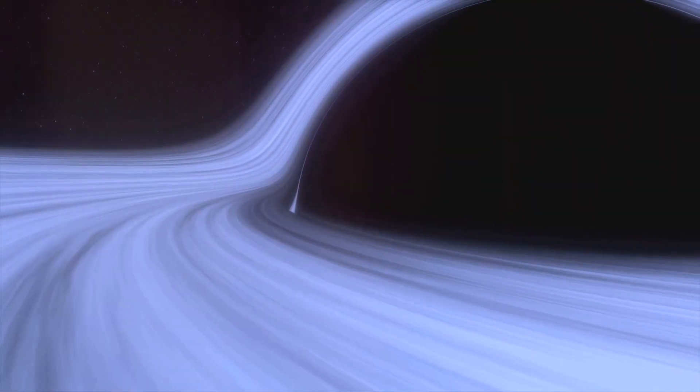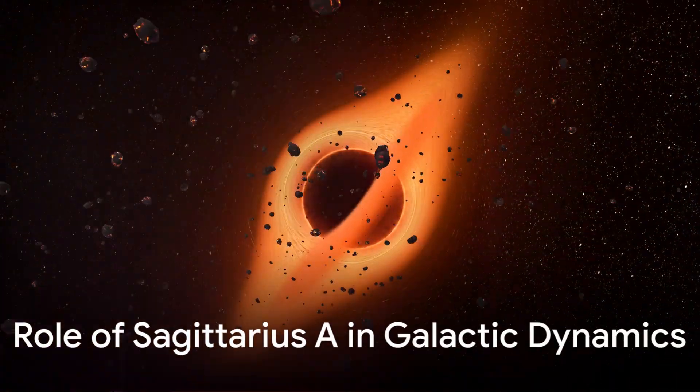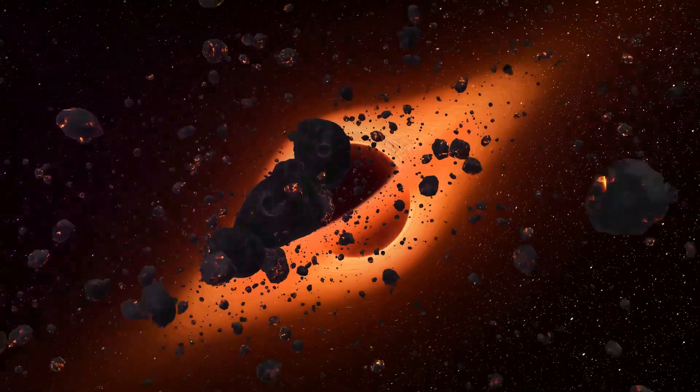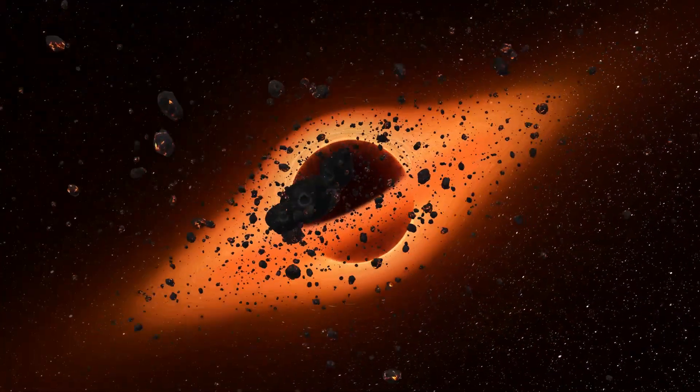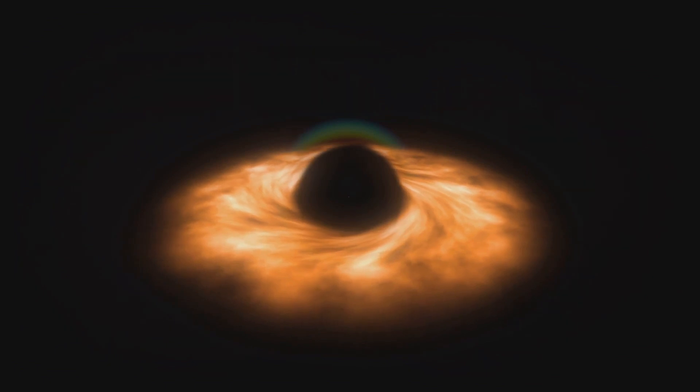Today we'll explore what would happen if Sagittarius A-star suddenly vanished. At the heart of the Milky Way lies a powerful force, Sagittarius A, a supermassive black hole with a mass over 4 million times that of our Sun. But how important is it to the stability and structure of our galaxy?